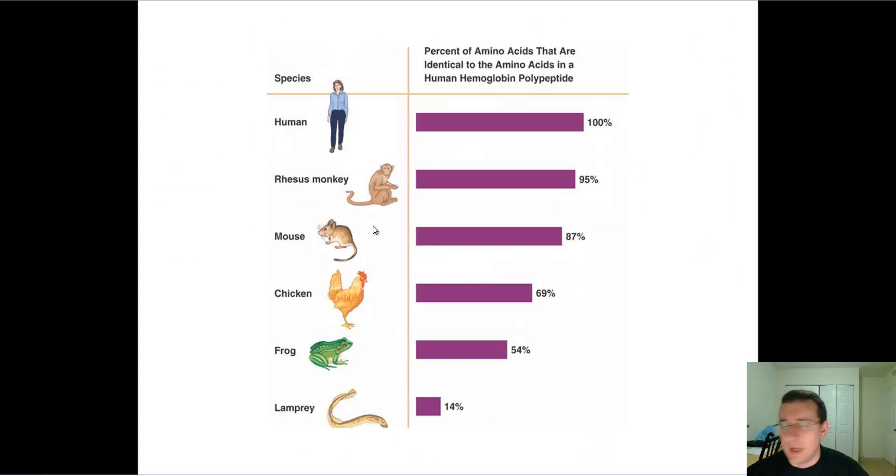Another kind of anatomical similarity is actually DNA or amino acid sequences. Now remember that a protein sequence is going to be determined by the DNA sequence. So when you see protein similarities, you're really seeing at the same time DNA similarities. But either way, look at the fact that about 95% there's a similarity between rhesus monkeys and humans. But the mouse is about 87% similar to humans. A chicken is 69% similar to humans. A frog is 54% similar to humans. A lamprey is 14% similar to humans. What is that telling you? It's telling you that we share a little bit of common ancestry with the lamprey because we have some similarities in protein and DNA structures with the lamprey.